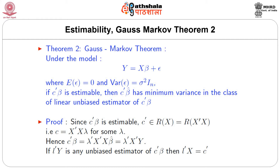Now we come to the Gauss-Markov theorem. Under the model y equal to X beta plus epsilon, where the expectation of epsilon is zero and the variance of epsilon equals sigma-squared I_n: if c-transpose beta is estimable, then c-transpose beta-hat has minimum variance in the class of linear unbiased estimators of c-transpose beta. This is what we had earlier called BLUE — Best Linear Unbiased Estimator.